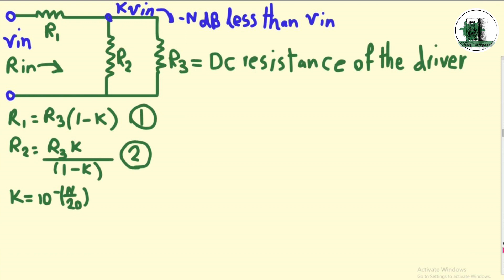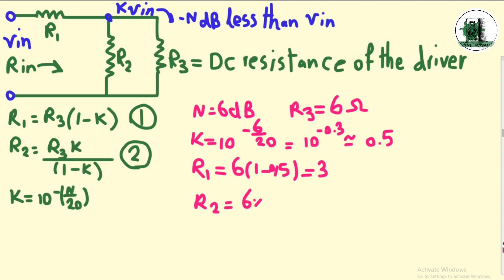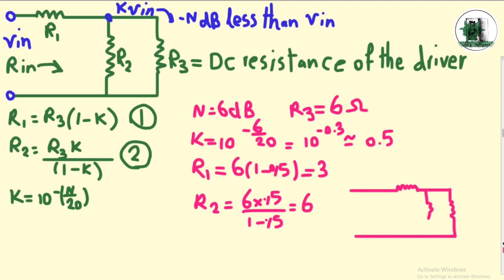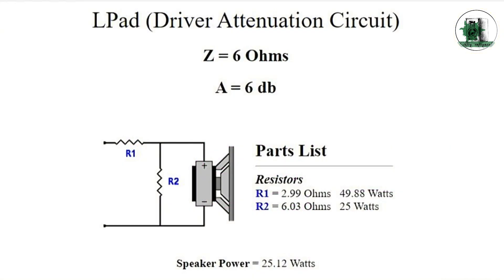Let's try the same values as the introduced website at the beginning of the video. Attenuation was 6 dB and the speaker impedance was 6 ohms. As we wanted, the input impedance is 6 ohms, which is equal to the DC resistance of the driver. The values are the same as the website.